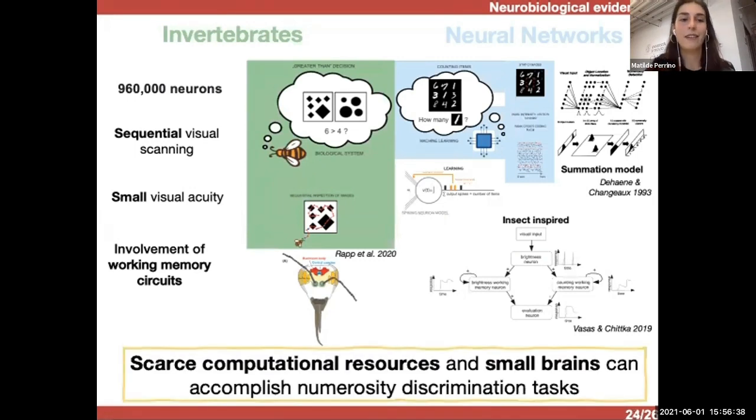So, just on the wake of this minimalist approach, maybe to think about very big brains and complex, high-functional associative regions is not necessary because scarce computational resources and small brains can accomplish this type of discrimination.